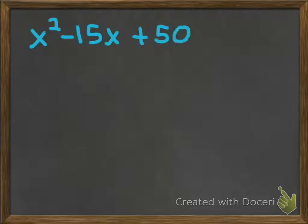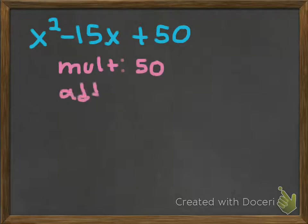The first example I'm going to give us is x squared minus 15x plus 50. So how can we factor this? The way you want to think about factoring is you're trying to come up with two different numbers. They have to multiply to positive 50 and add to negative 15. So it's multiplying to the last number, adding to the middle number.